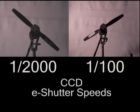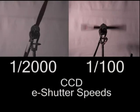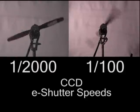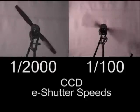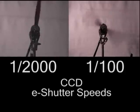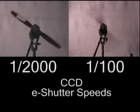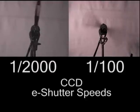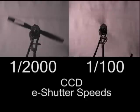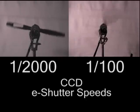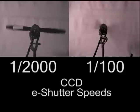It's possible to soften artifact generated by both CCD and CMOS sensors by reducing e-shutter speed. By reducing the e-shutter speed, the propeller shadow in each case is converted to a soft blur. The CCD camera on the left has an e-shutter speed of 1/2000th of a second, while the right uses 1/100th of a second.